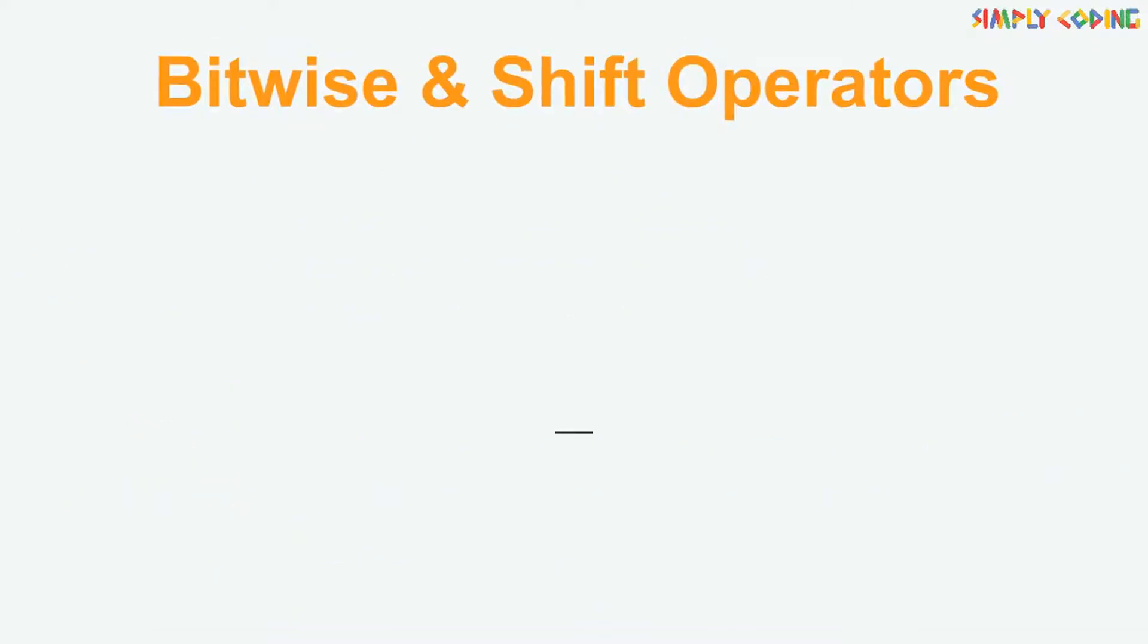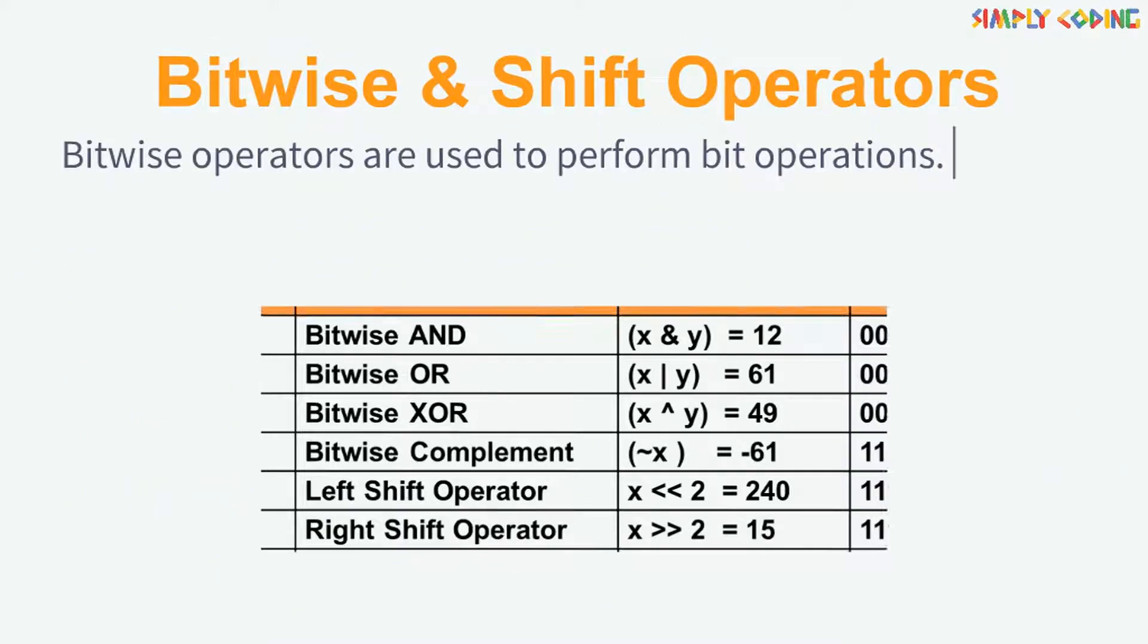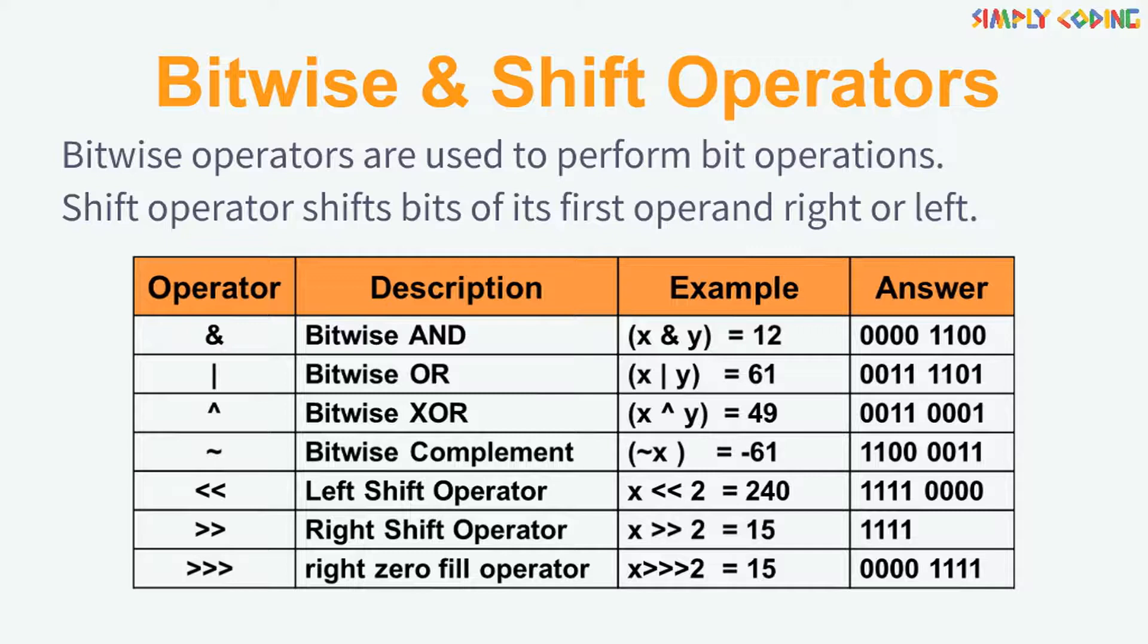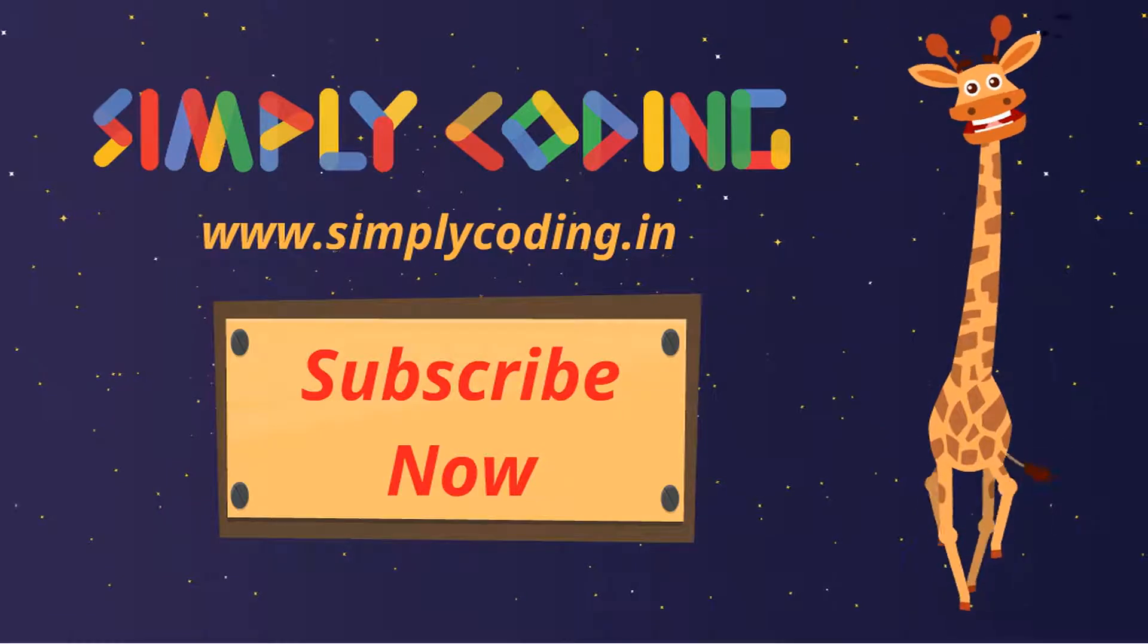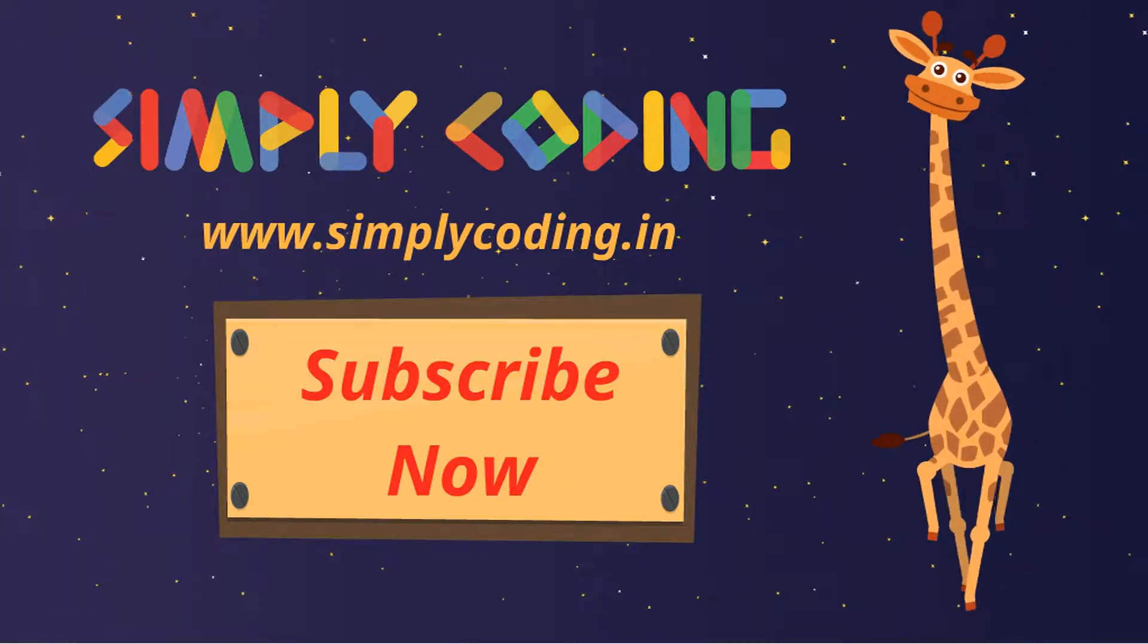Next are bitwise and shift operators that perform operation on bits. I will skip explaining this in detail. In our next video, we will learn more about operator precedence and associativity in Java. To be continued...